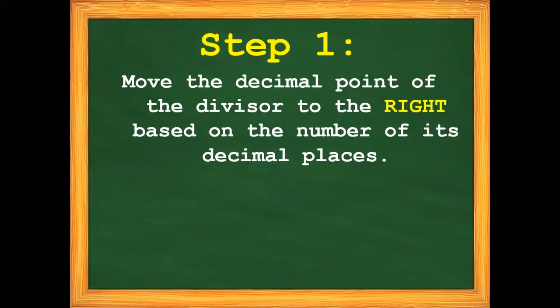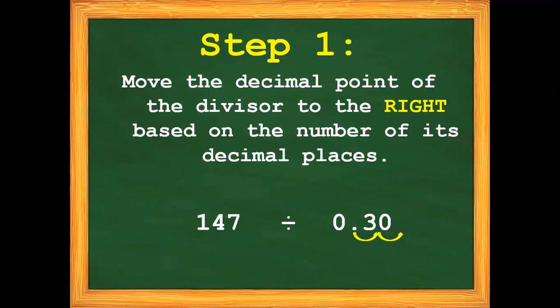Step 1: Move the decimal point of the divisor to the right based on the number of its decimal places. We have 147 divided by 30 hundredths. Our divisor is 30 hundredths — how many decimal places? Two decimal places. So we need to move the decimal point to the right 2 times. So now we have 147 divided by 30.